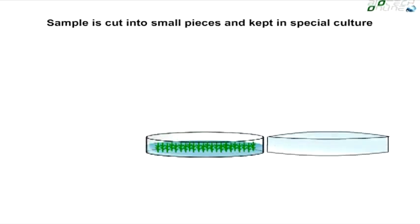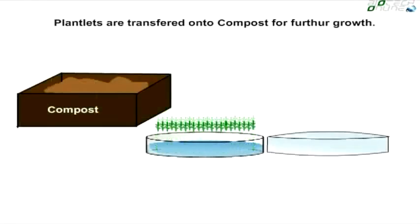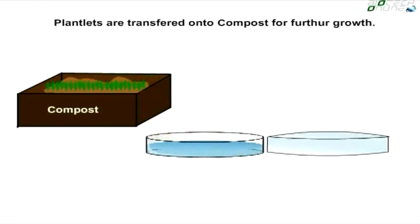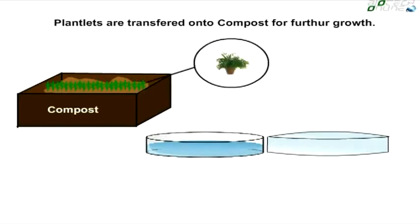These plantlets are complete with roots and stems. In the fourth step, the plantlets are transferred onto compost where they gradually develop into identical copies of the plants from which the sample was taken.